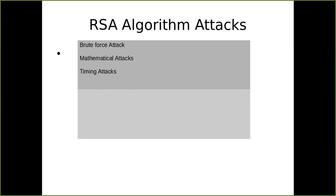Some well-known attacks against RSA include brute force attacks, where the attacker tries all combinations — which is very time-costly — mathematical attacks, and timing attacks. A good analogy for the public key cryptographic system is your email ID and password: you share your email ID publicly with anyone who wants to communicate with you, but keep the password private. Similarly, you publish your public key but keep your private key confidential.